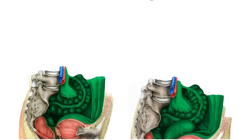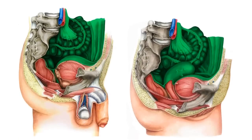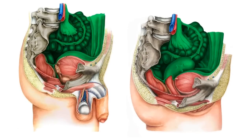We're going to begin this tutorial by having a quick look at both the male and female peritoneal cavities in a sagittal view. We have our male cross-section on the left and the female cross-section on the right, with the peritoneal cavities of both highlighted in green.